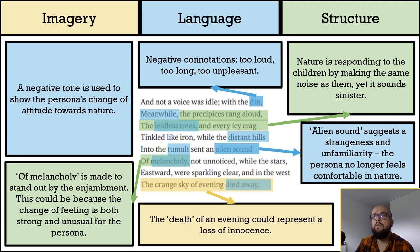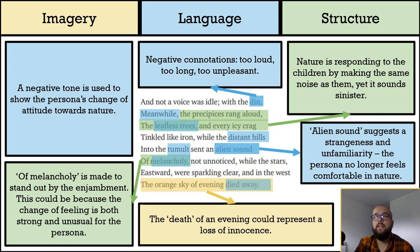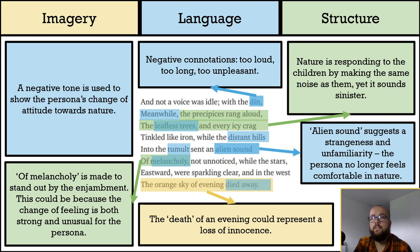The poem's final image — 'the orange sky of evening died away' — could represent a number of other deaths. It could represent a loss of innocence, as the persona is shocked out of their youthful naivety. It could represent the death of their love for nature. It could even, as students have previously suggested, symbolise the death of Wordsworth's mother, whose death caused him to move in with his maternal grandparents and uncle.